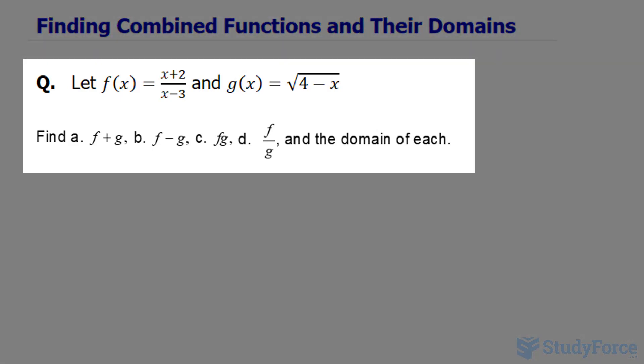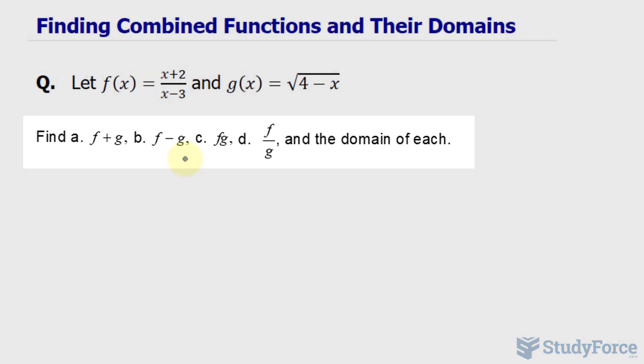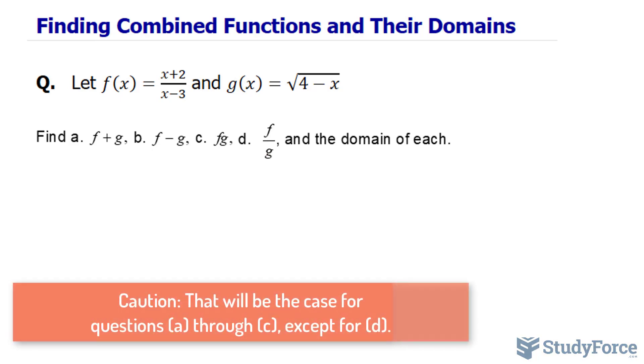Our question reads: let f of x equal to this expression and g of x equal to this. Find f plus g, f minus g, f times g, and f divided by g, and find the domain for each. I believe the best way to do this is to find the domain of each individual function first, and then add or subtract whatever they ask for next.